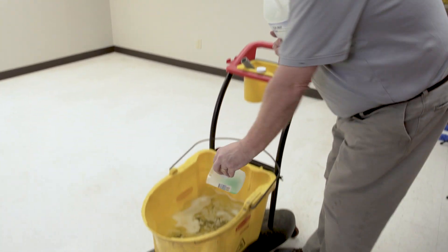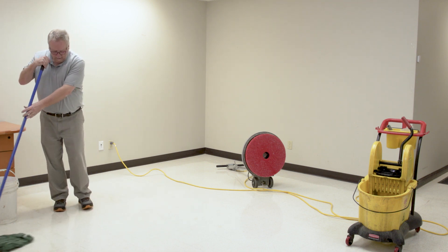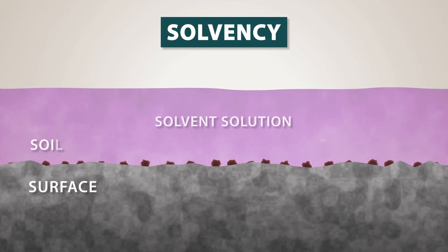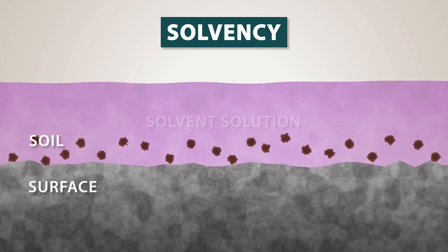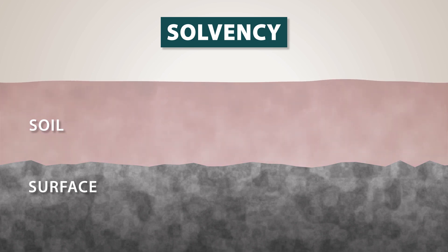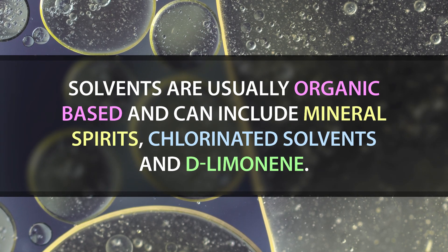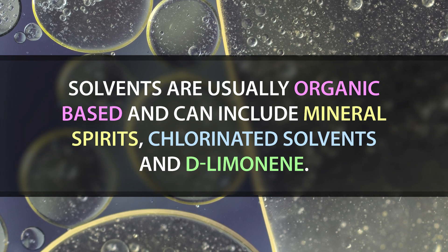There are four ways that cleaning can take place. Each action is useful in different circumstances, although cleaning by detergency aided by mechanical action is by far the most common in today's environment. Cleaning by solvency involves applying a solvent solution to oil-based organic soil. Over time, the soil particles are dissolved and distributed throughout the solution. When the solution is removed, the soil is removed along with it. Solvents are usually organic-based and include mineral spirits, chlorinated solvents, and limonene.